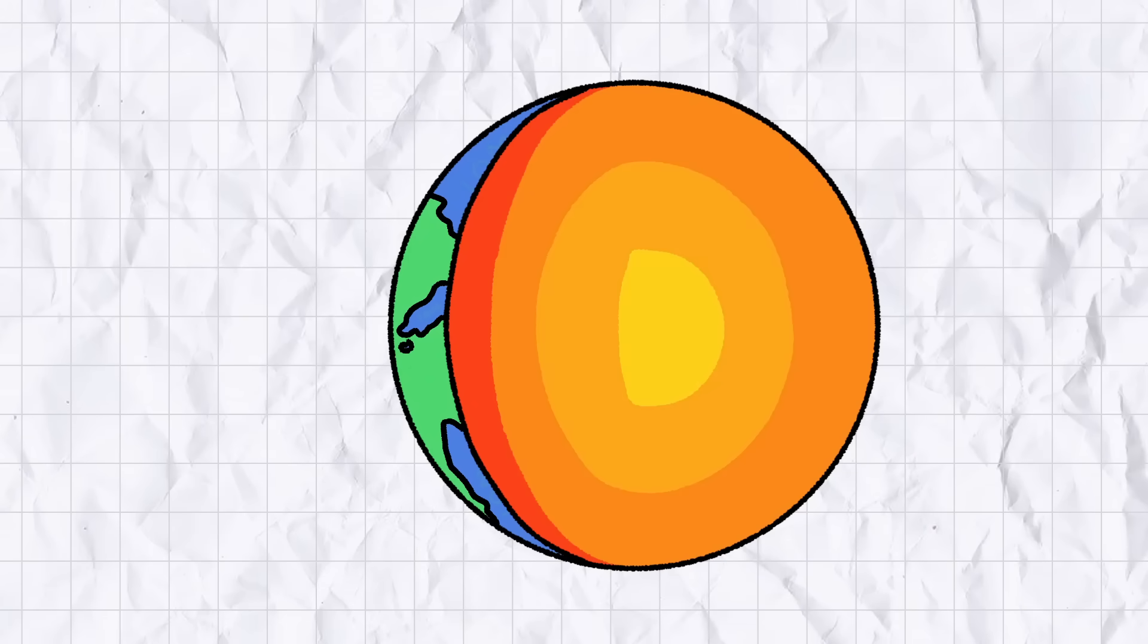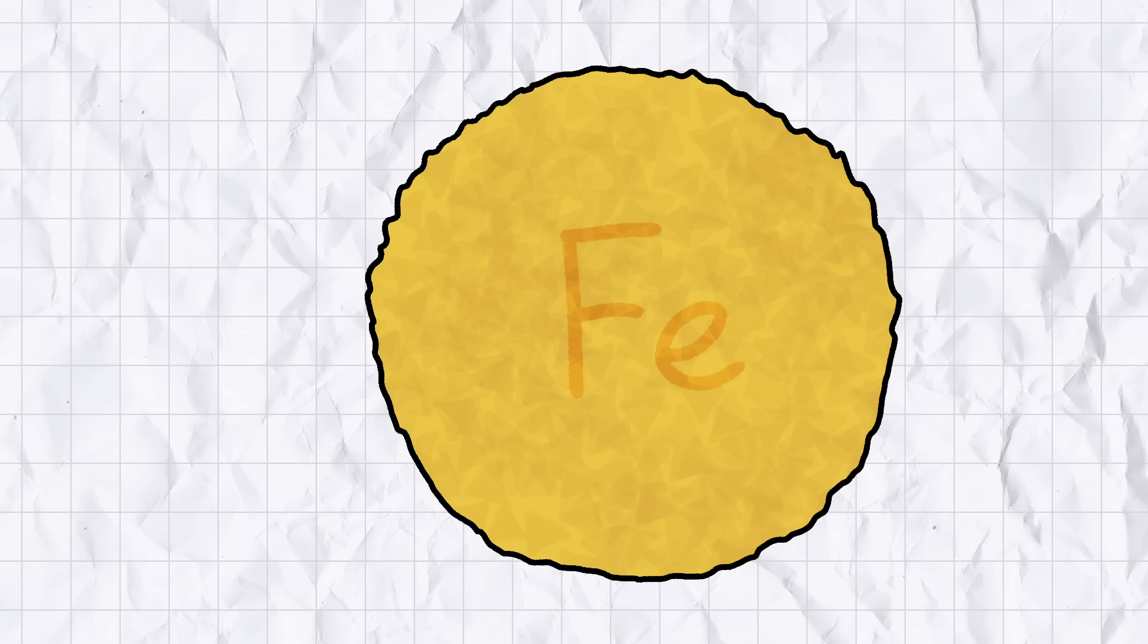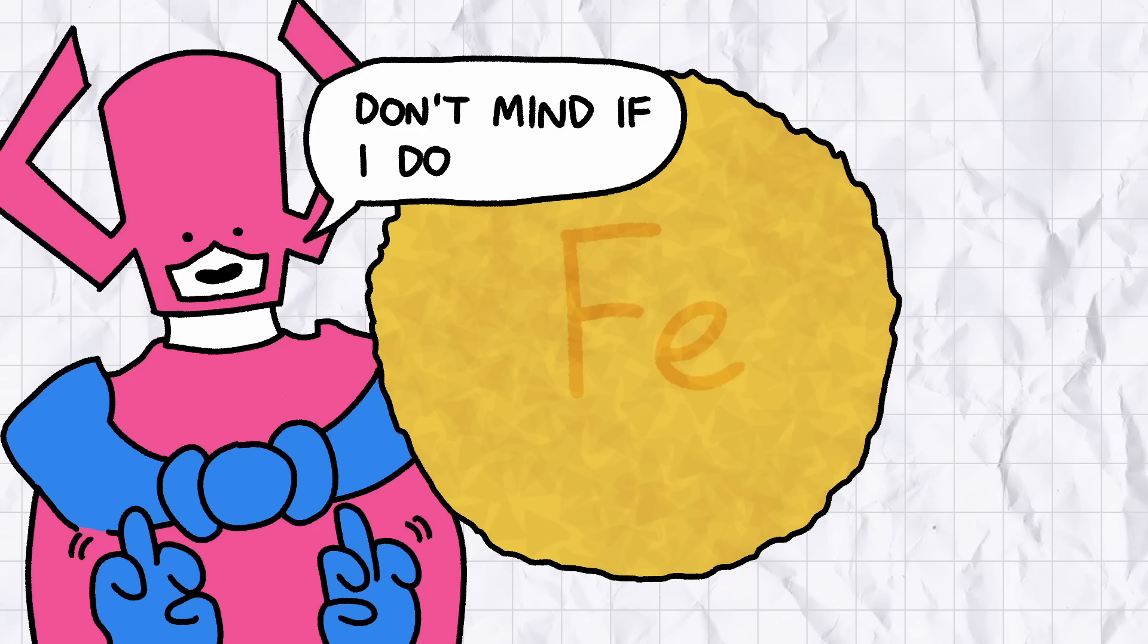Gram for gram, iron is the most common metal on Earth and the main component of the planet's core. The delectable hazelnut centre of the enormous Ferrero Rocher we call our home.